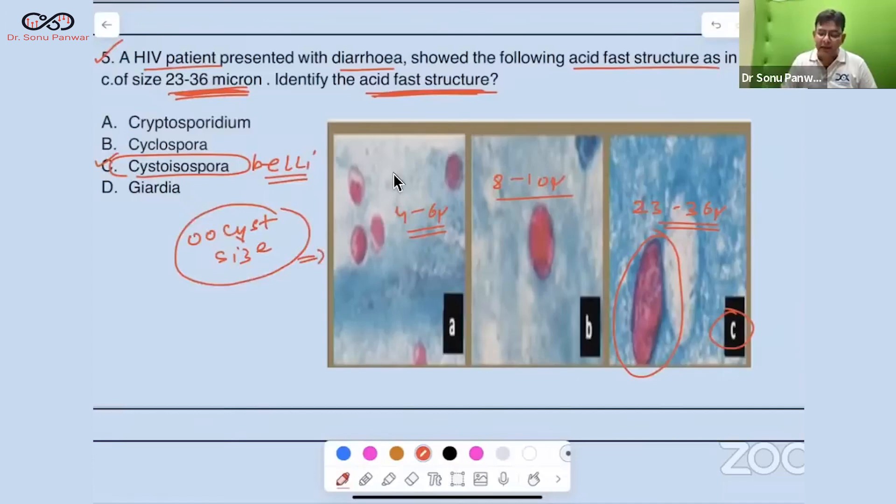And all of them, they are pink in color. So all of them, they are acid fast. How much? It varies between 0.25 to 0.5%. And which particular acid fast staining we do for them?